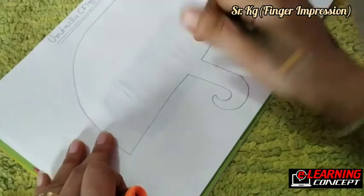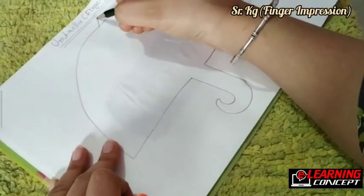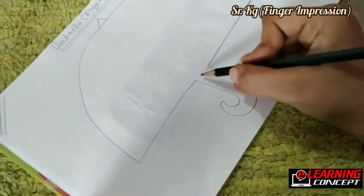Very good. One slanting line, second slanting line. This is our umbrella.